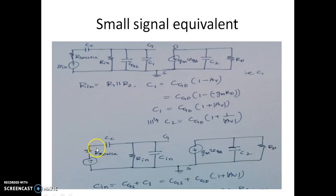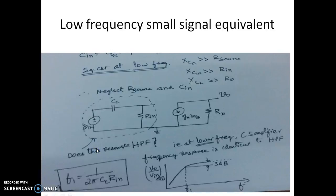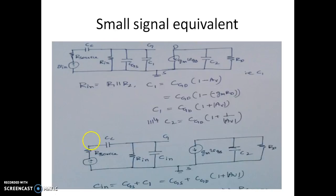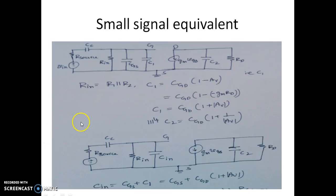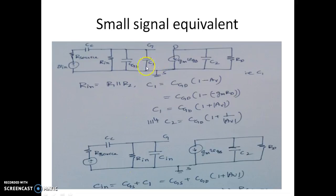All the capacitors and resistors of the circuit are represented in the equivalent circuit. The input voltage and R_source associated with the source signal are shown, along with the coupling capacitor. Rn is the equivalent of R1 parallel R2. Cin is the combination of CGS and C1 — that is, CGS plus C1 gives Cin, the parallel combination.